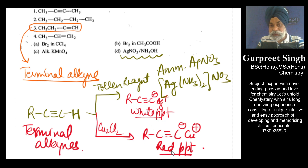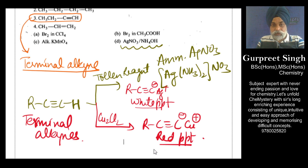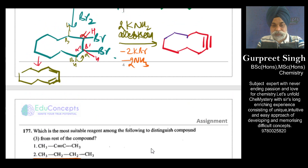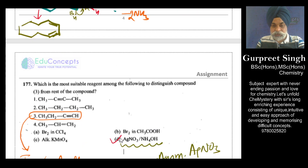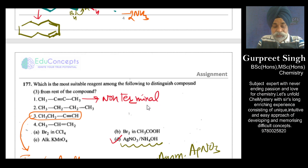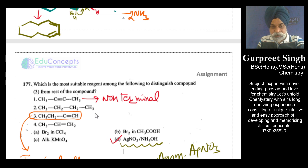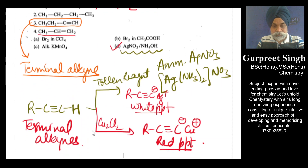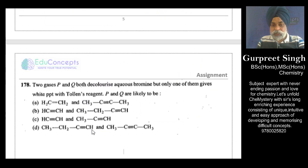So the Tollens' reagent test and the cuprous chloride test apply specifically to terminal alkynes — giving white and red precipitates respectively. Non-terminal alkynes or alkenes can only be tested with bromine water (decolorization). Alkanes do not react with ammoniacal silver nitrate. Therefore, the best answer is option D, because only a non-terminal compound would require bromine water as the distinguishing test, while terminal alkynes uniquely respond to silver nitrate.